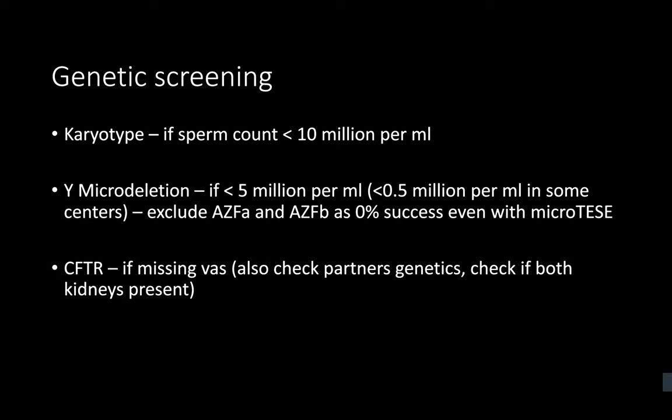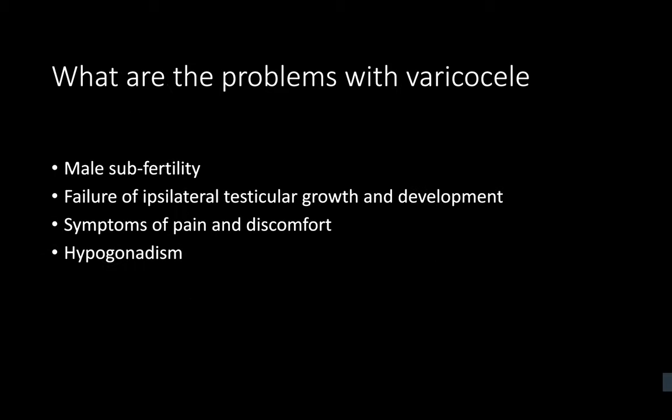They've been trying to conceive for three years with unprotected sexual intercourse. There are no other risk factors in the history for either partner. I'll arrange for a semen analysis with ideally two samples produced at least three months apart, and also a serum hormone profile to measure early morning testosterone, FSH and LH.